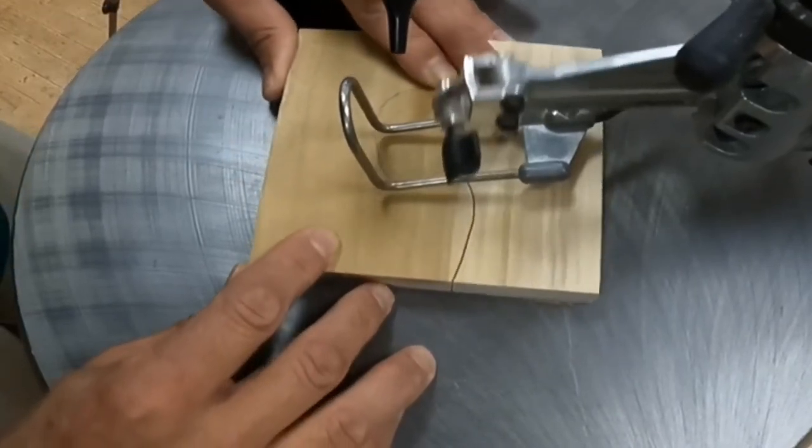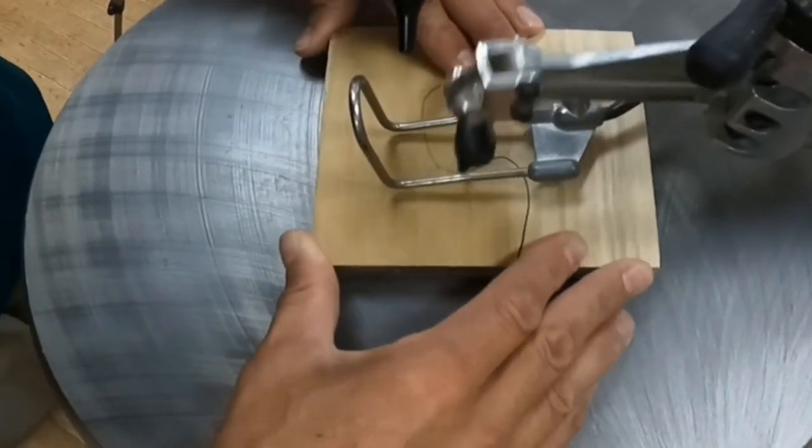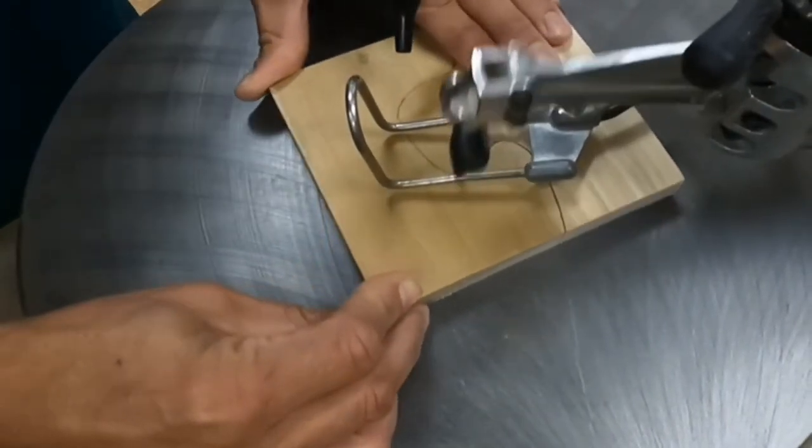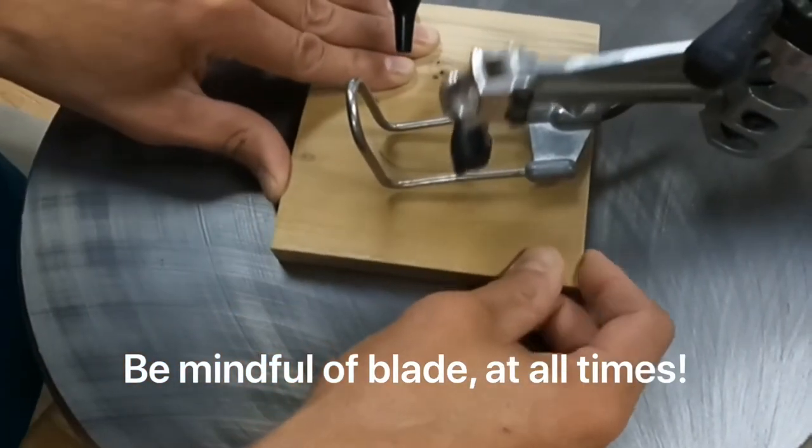So what's happening is that the blade is facing towards us, the operator. And the blade teeth are facing down towards the table, so it's cutting down.